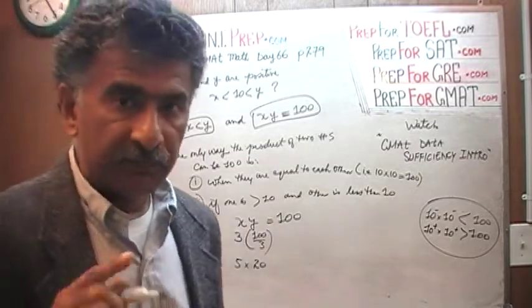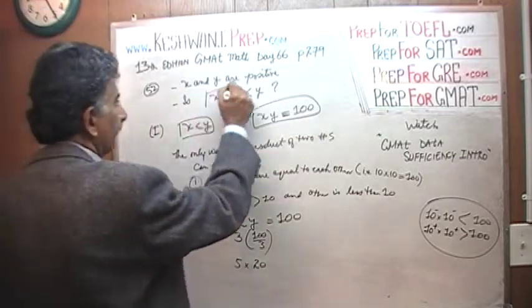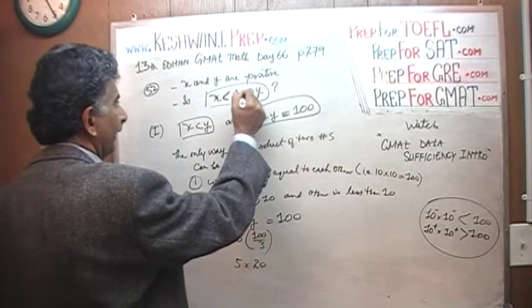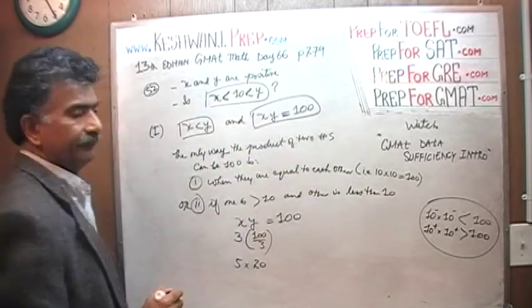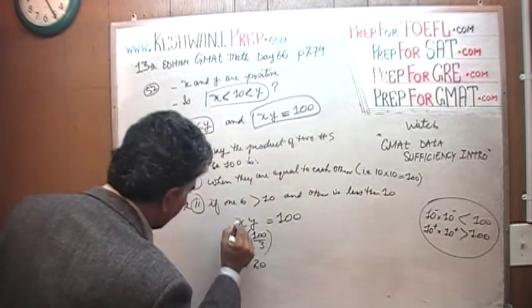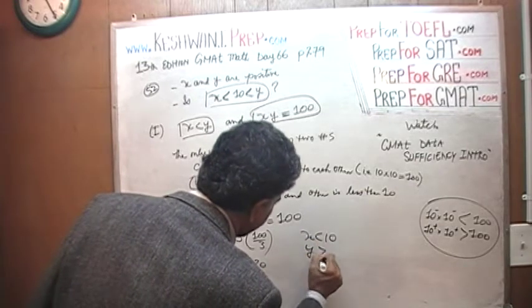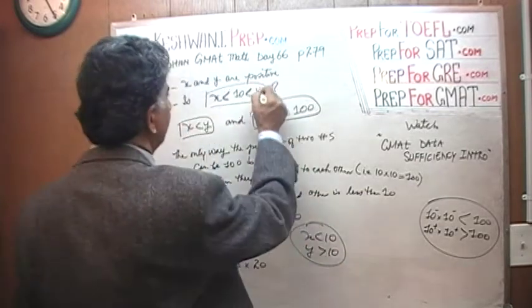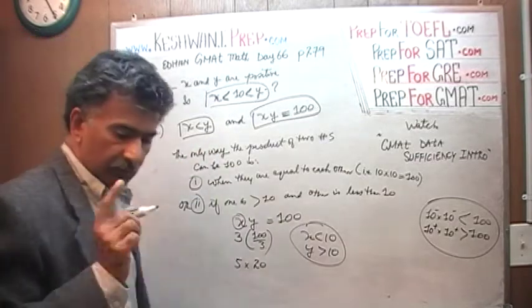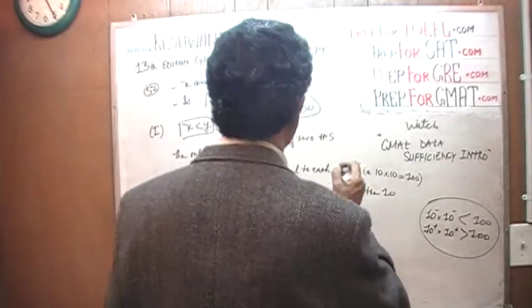So therefore, the first statement does answer the question. The question was, is this true? Which we just found out that one is less than 10 and the other one is more than 10. Our X here is less than 10, and our Y here is more than 10, which is precisely what this says on the top. The question was, is it true? The answer is yes. So, the first statement by itself does the job.